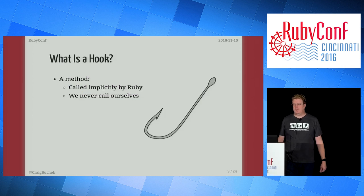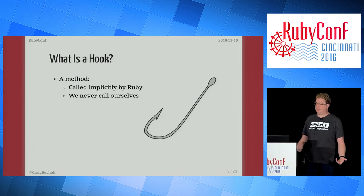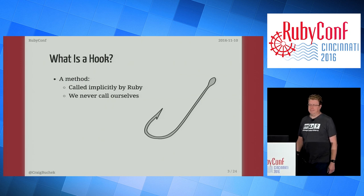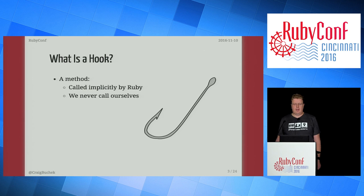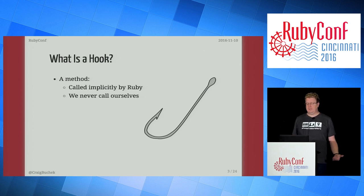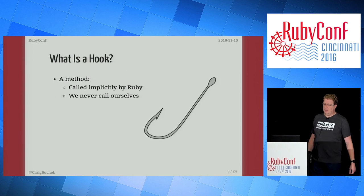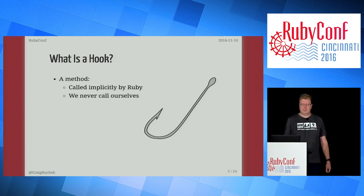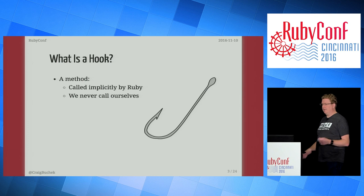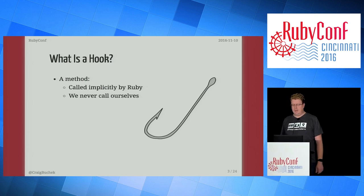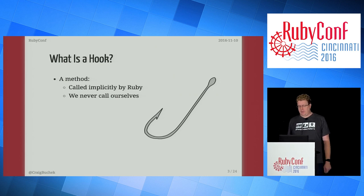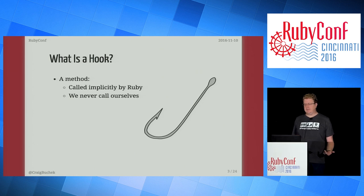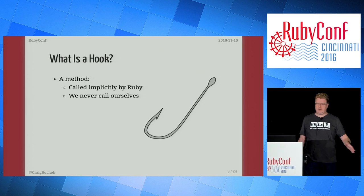So what is a hook? The definition I'm going to use in this talk is a method that's called implicitly by Ruby and that we never call ourselves. Because it's implicit, this can be surprising and it can be difficult to troubleshoot. I like to think of it as "spooky action at a distance" — that's a term from physics, think Einstein. In the Ruby docs, you'll see them referenced a few different ways: sometimes called a hook, sometimes called a callback. I'm not using the term callback because that's got some other meanings. A lot of times you'll see the phrase "Ruby calls this," which is an indicator that it's a hook. There are hooks and callbacks in Rails and other libraries, but I'm just going to cover the ones in Ruby today.